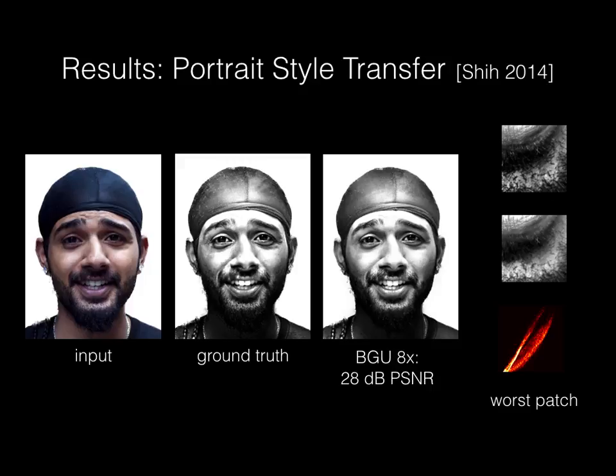You see that we lost some high-frequency texture around the beard. And you can see that in the transfer function. The same input intensity maps to two different output intensities, which accounts for the difference.